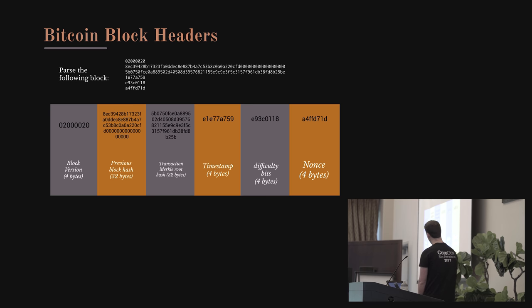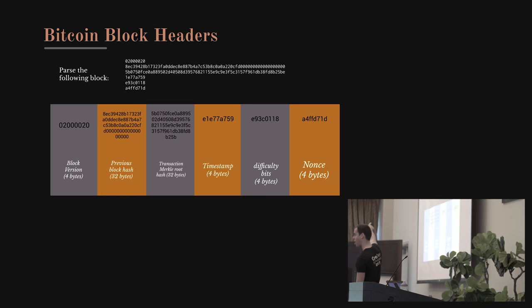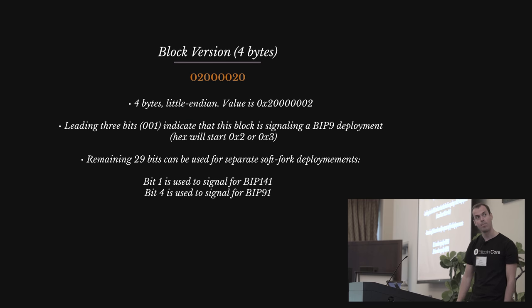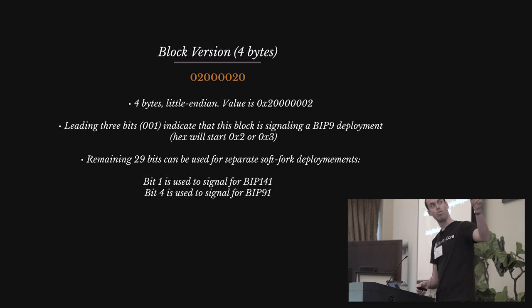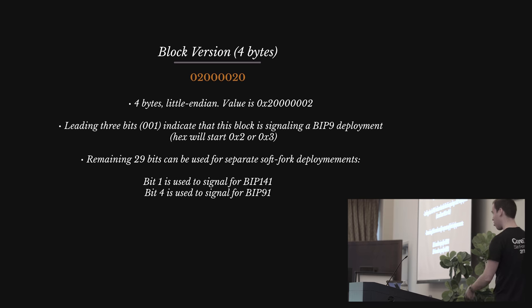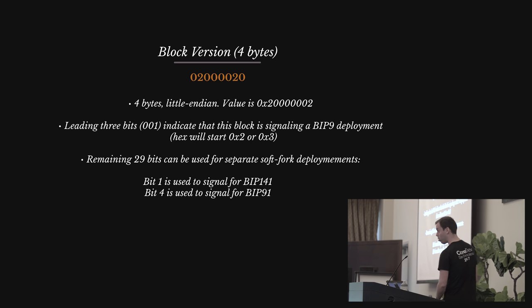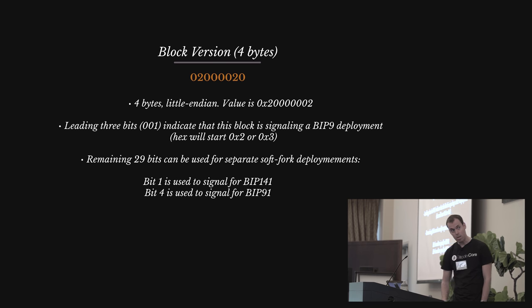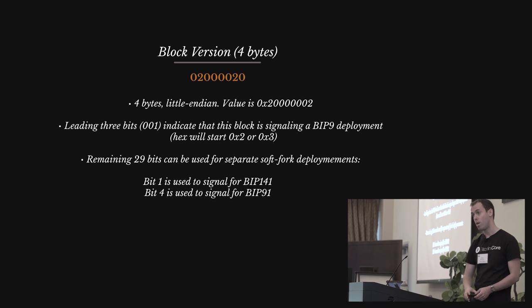Let's parse a block. When a block is sent over the wire, it's 80 bytes of header — 160 hex characters. The first four bytes are the version, little endian. For this block the version is 0x20000002. The leading three bits — 001 — indicate this is signaling for a BIP9 deployment (version bits), a way we roll out new soft forks. The leading hex character will always be 2 if it's 0010 or 3 if it's 0011. The remaining 29 bits can be used for separate soft fork deployments — we can have up to 29 soft fork deployments in-flight concurrently. Bit 0 was used to signal CSV (check sequence verify); bit 1 signals for BIP141, that's SegWit; and bit 4 was used to signal for segsignal or BIP91, a way of activating SegWit with 80% support instead of 95%.